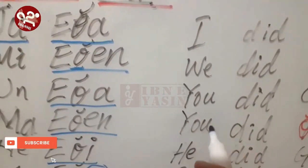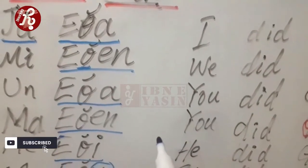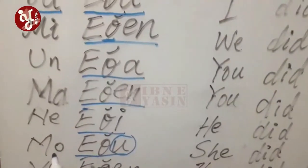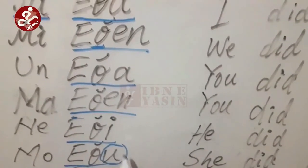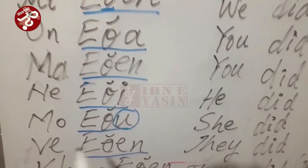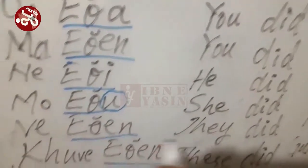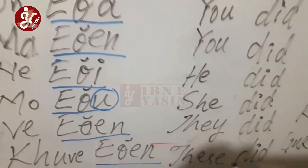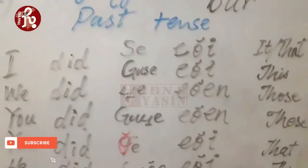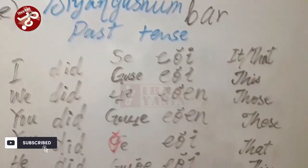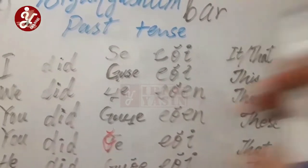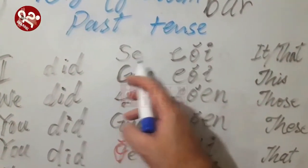'Un' is singular and 'ma' is more than one person. 'Ne eti' means they already did something in the past — 'he did'. 'Mo etu' is the form used for females, so 'mo etu' means 'she did'. 'We eten' means 'they did'. 'Kwe eten' means 'these did', referring to a plural group.